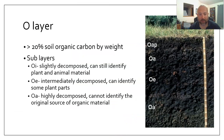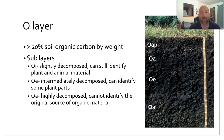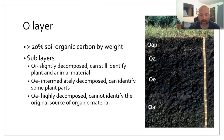Let's look at that O layer, because that's where we see the majority of our humus and organic matter. For it to be an O layer, it's got to be greater than 20% soil organic carbon by weight. There are three sub-layers that could be present: OI, OE, and OA. OI is slightly decomposed — you can still identify the plant and animal material; there's a twig there, a blade of grass. OE is intermediately decomposed — you can identify some plant parts, like part of a twig or part of a pine needle. OA is highly decomposed — you cannot identify the original source of the material; it's all humus.